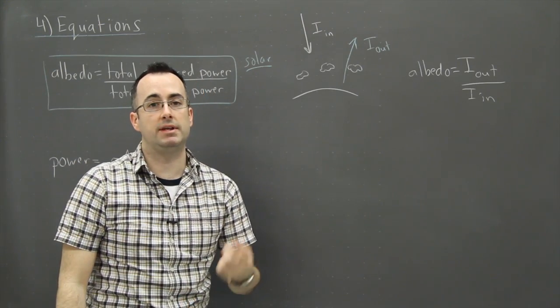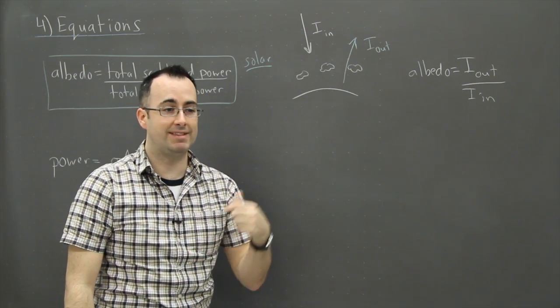Where if everything that came in was completely bounced back, then your albedo would be one because you'd have the exact same amount. So that could be something with a really reflective surface.